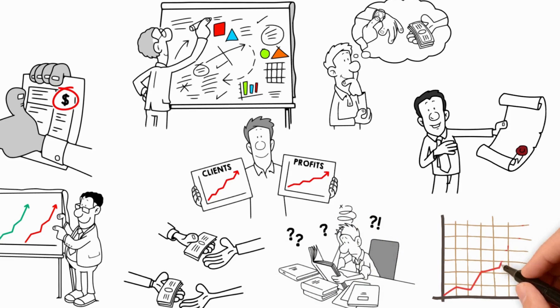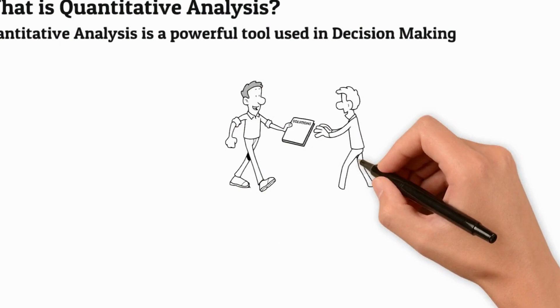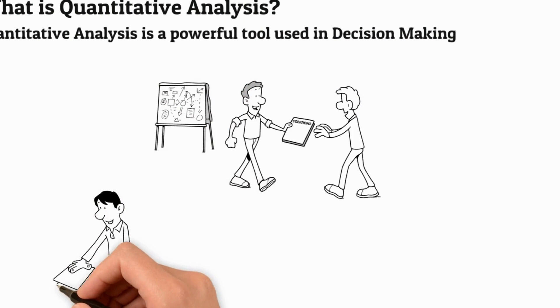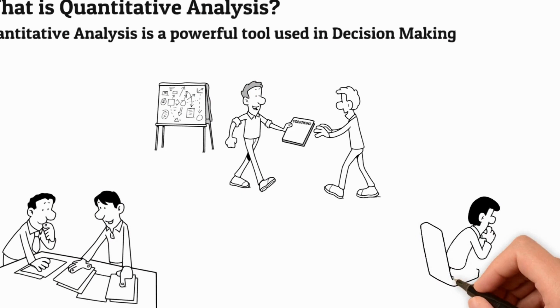What is Quantitative Analysis? Quantitative Analysis is a powerful tool used in decision-making. It helps companies to measure, analyze, and interpret data to make informed decisions about their business operations. Quantitative Analysis is a complex process that involves gathering data, analyzing it, interpreting the results, and making decisions based on those results.